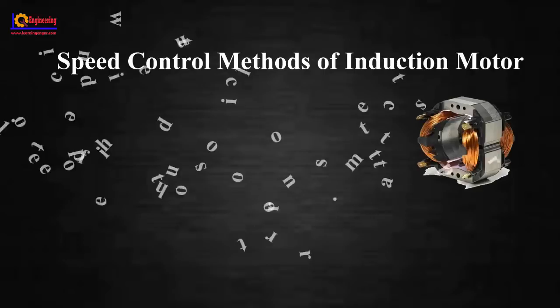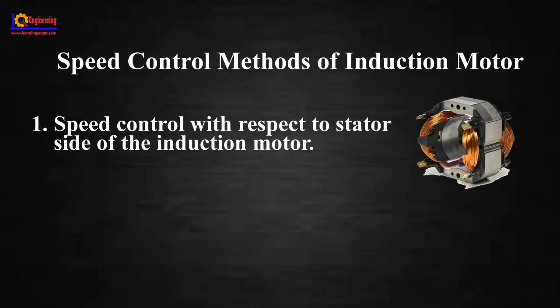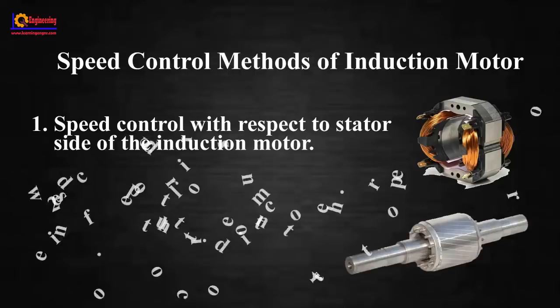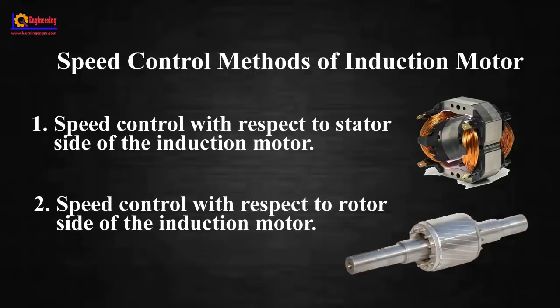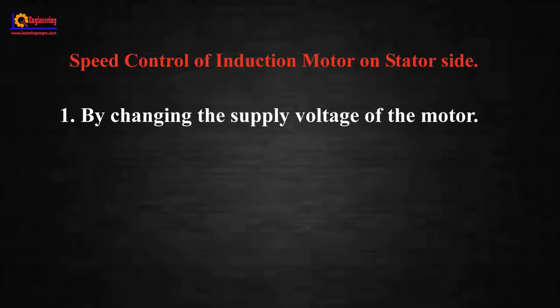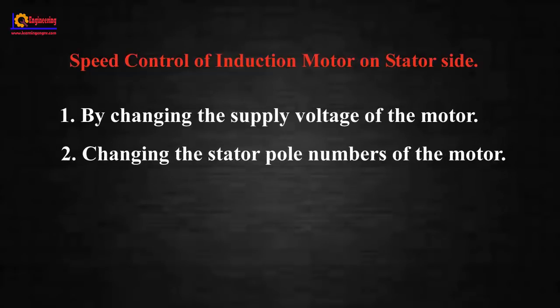Following are the main two types of controlling arrangements: speed control with respect to stator side and speed control with respect to rotor side of the induction motor. The speed control on stator side can be subdivided into several methods such as changing the supply voltage, changing the stator pole numbers, and changing the frequency.